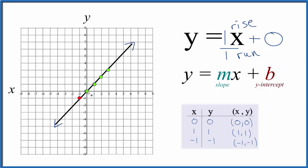Likewise, we could go in the opposite direction. We could go down 1 and over 1 to the left. Down 1, over 1 to the left. And all of these points, they're going to be on our line.